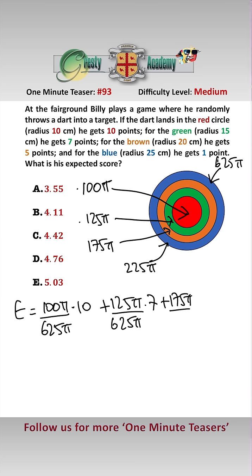Add 175 pi over 625 pi times 5, that's if he hits the brown. Add 225 pi over 625 pi times 1 point only if he hits the blue.